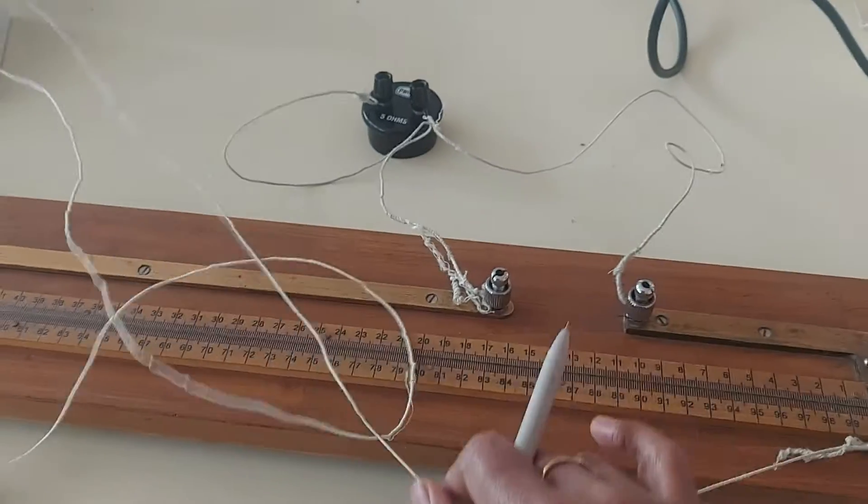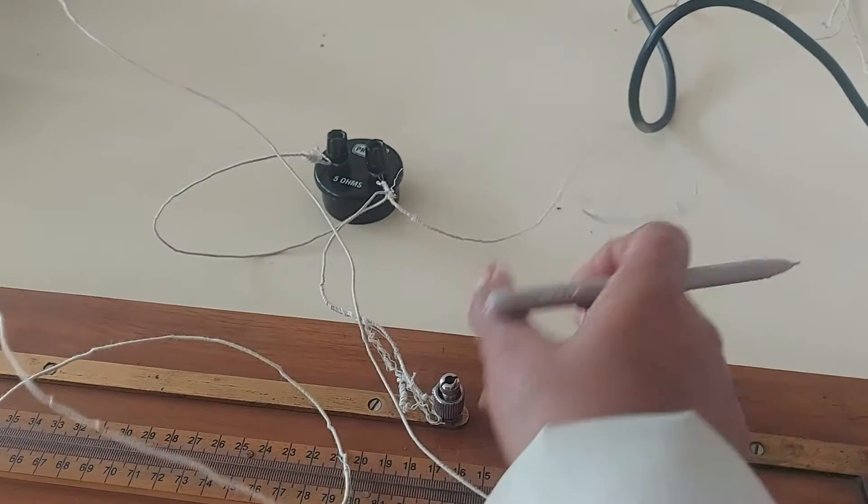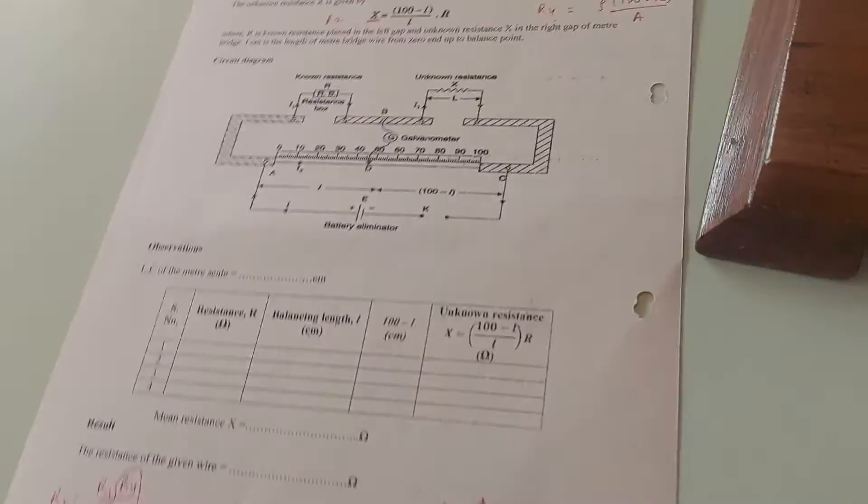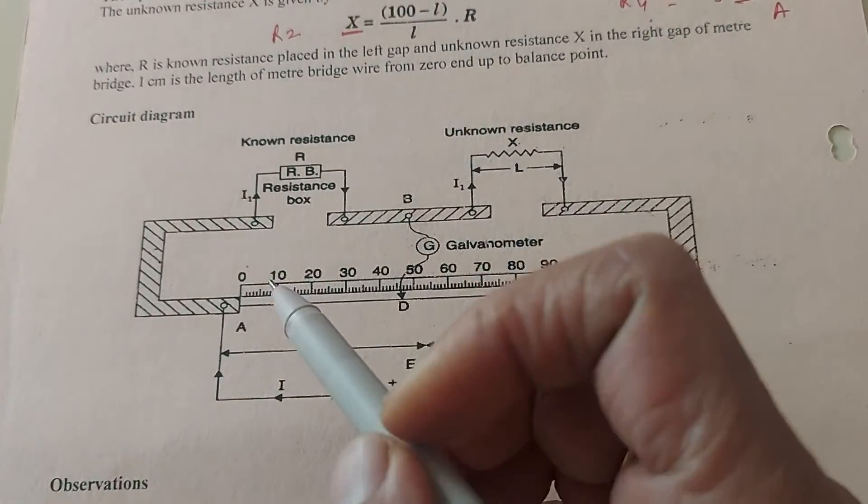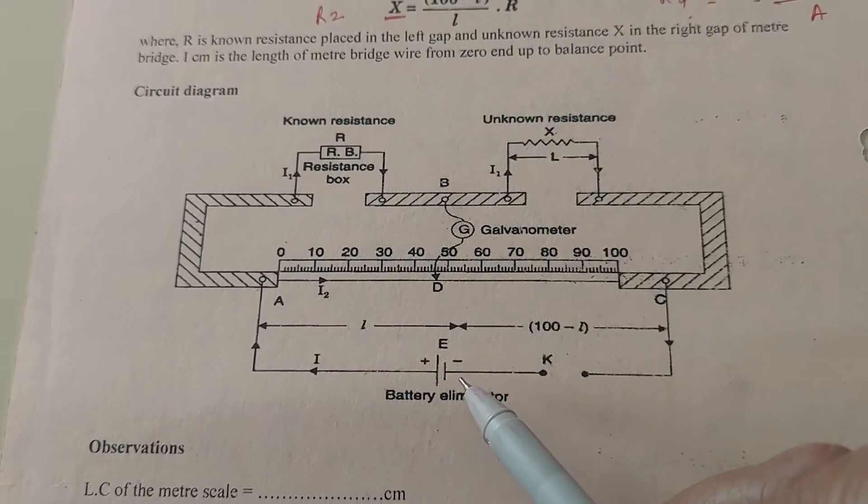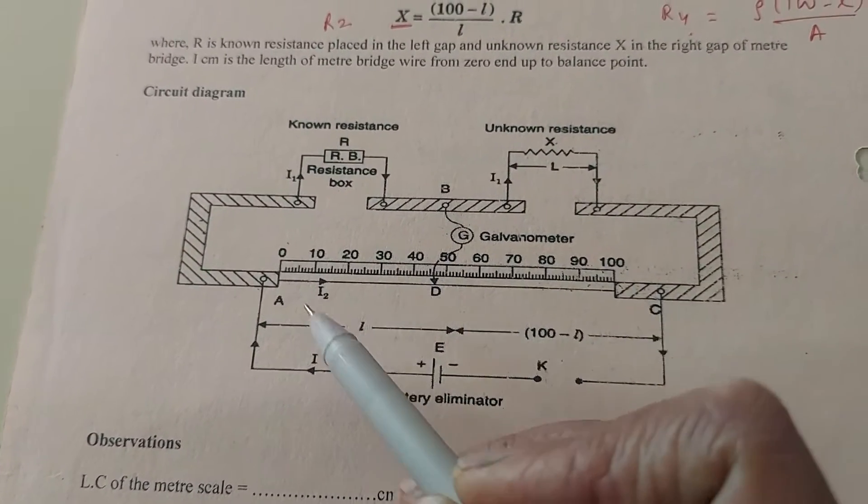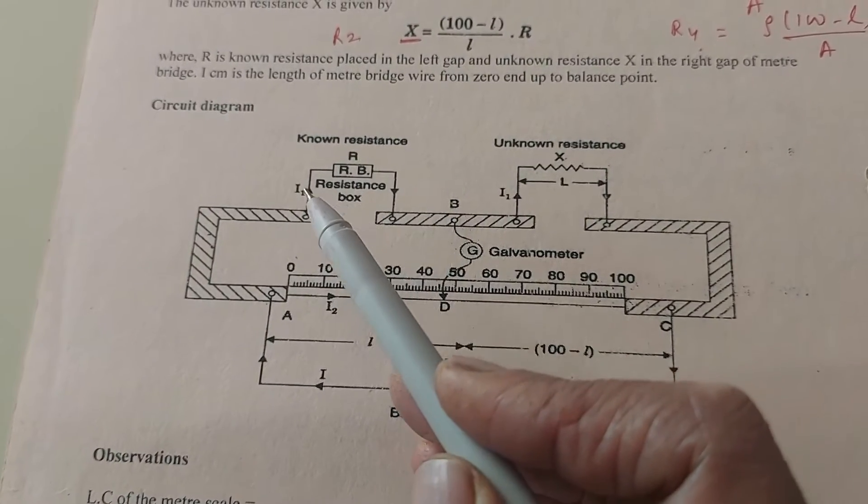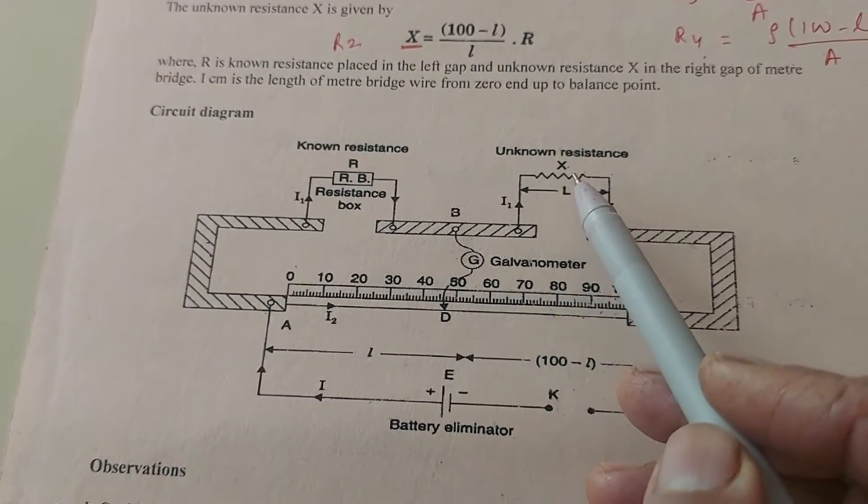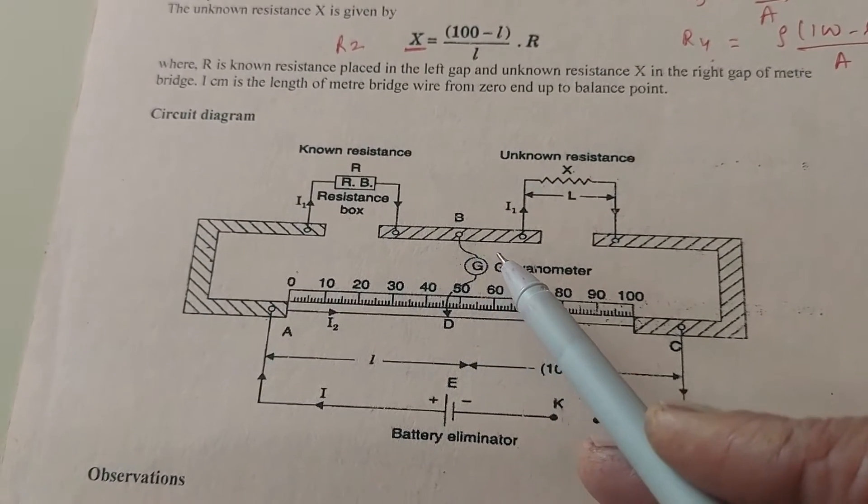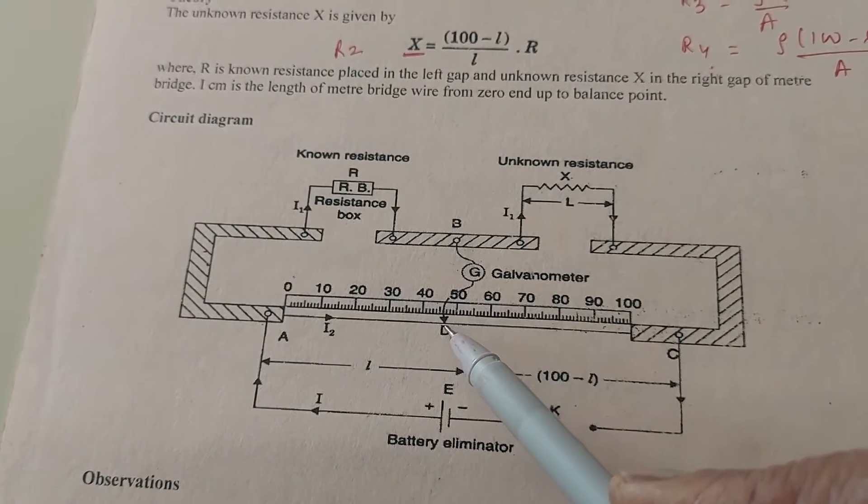Between these two terminals on the right side, you put the standard resistance whose value needs to be verified. The circuit diagram is this: meter bridge wire, this end positive, this end negative. On the top two, we have the standard resistance, given resistance, and here is the unknown resistance. The point in the center connects to galvanometer and the jockey.